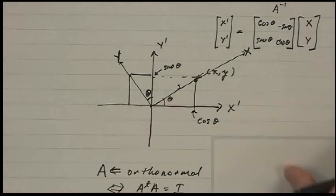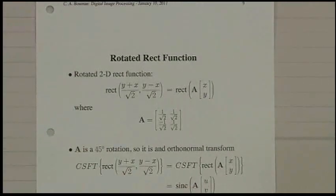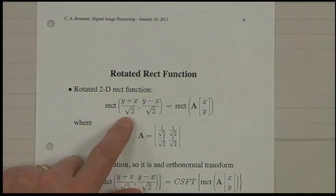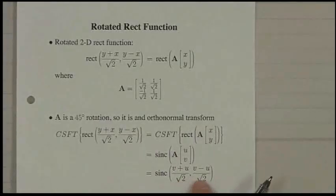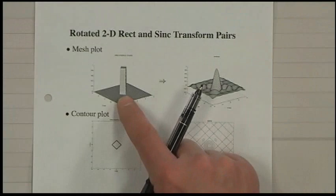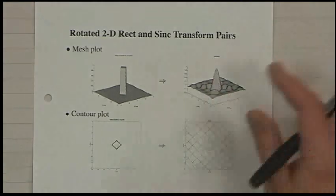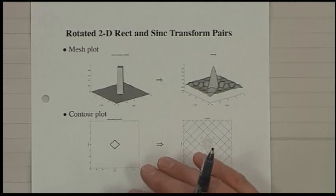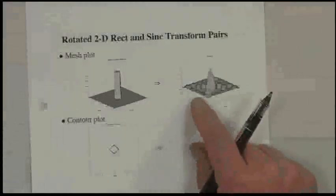A simple application: if I have a rect function, this is an orthonormal rotation of a rect function using this matrix, and the continuous space Fourier transform is also an orthonormal rotation of the sinc function. If I do a 45-degree rotation of a rect function in 2D, I get a 45-degree rotation of the sinc. It's pretty intuitive. The major point here is not just understanding it visually, but understanding how the math also corresponds to the pictures.